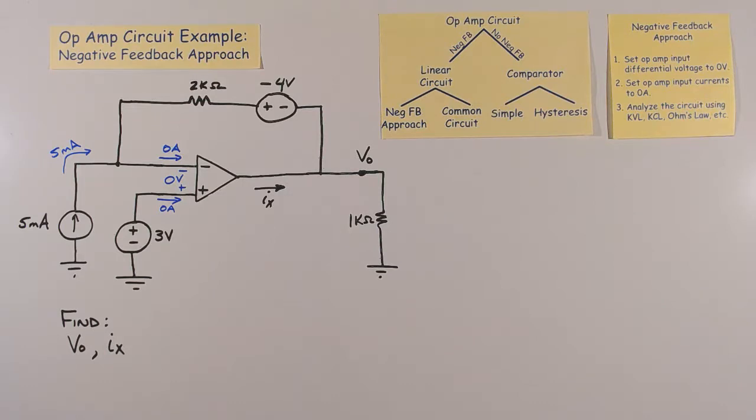By Kirchhoff's current law, this means that we have 5 milliamps going through the 2k ohm resistor.